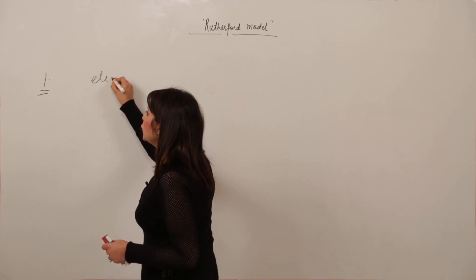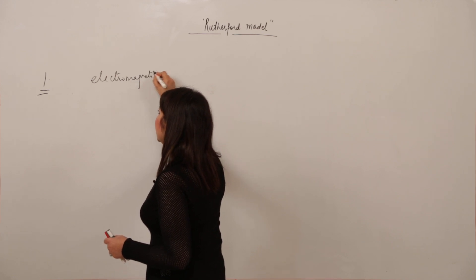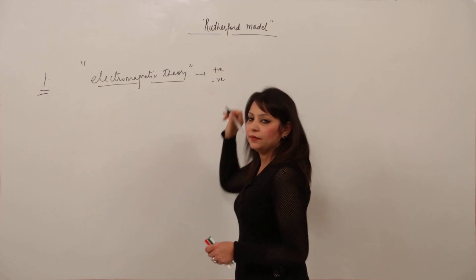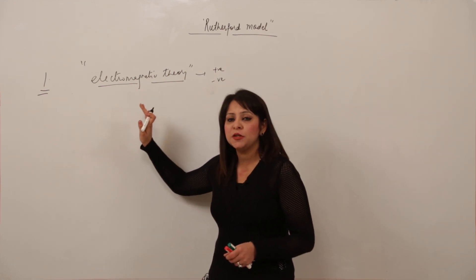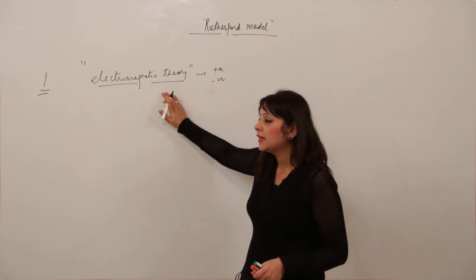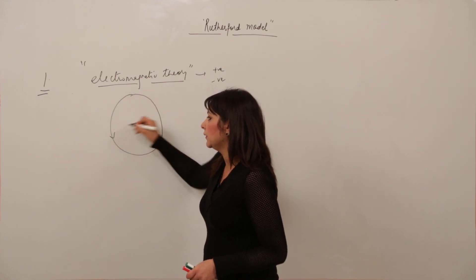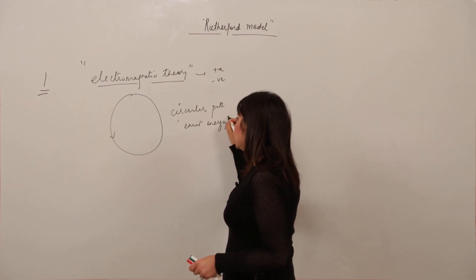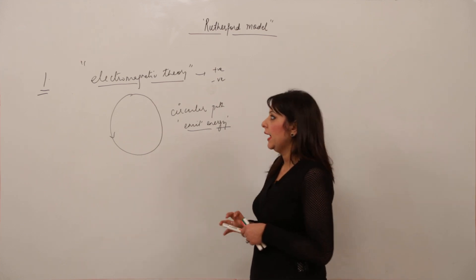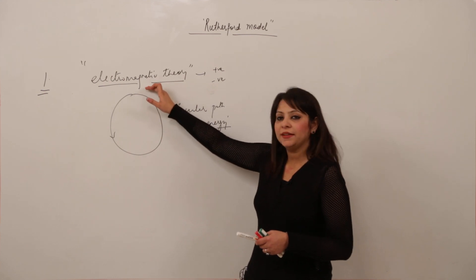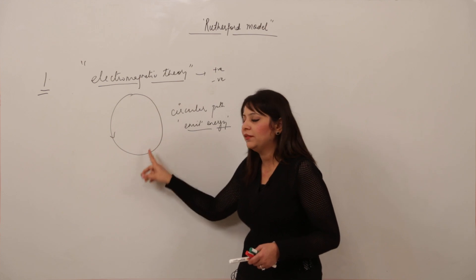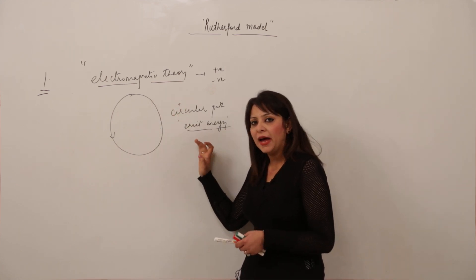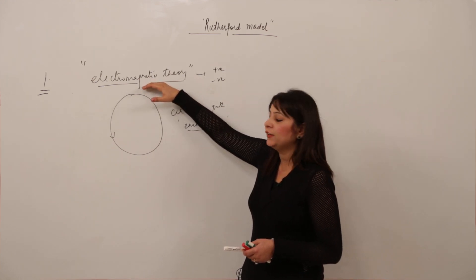The failure was on the basis of electromagnetic theory. We have a theory in physics called electromagnetic theory, which is applicable to all charged particles, whether the charge is positive or negative. This theory states that when any charged particle revolves in a circular path, it emits energy, and the energy emitted is continuous. This was a proven fact in physics.